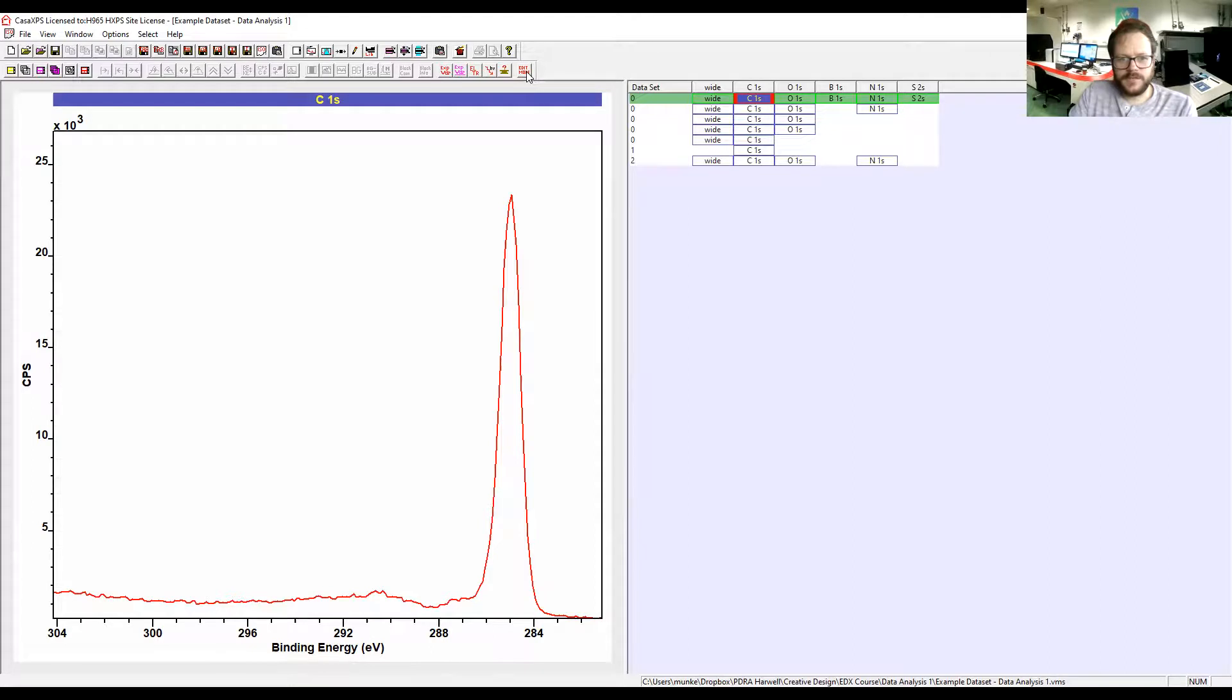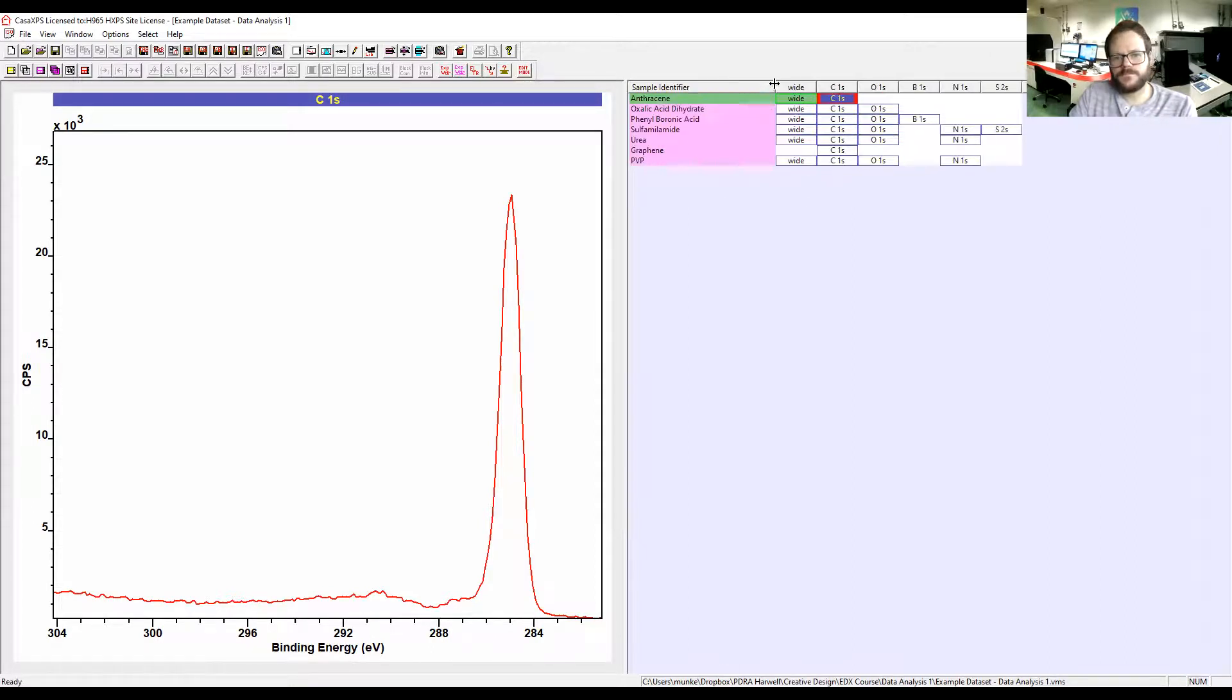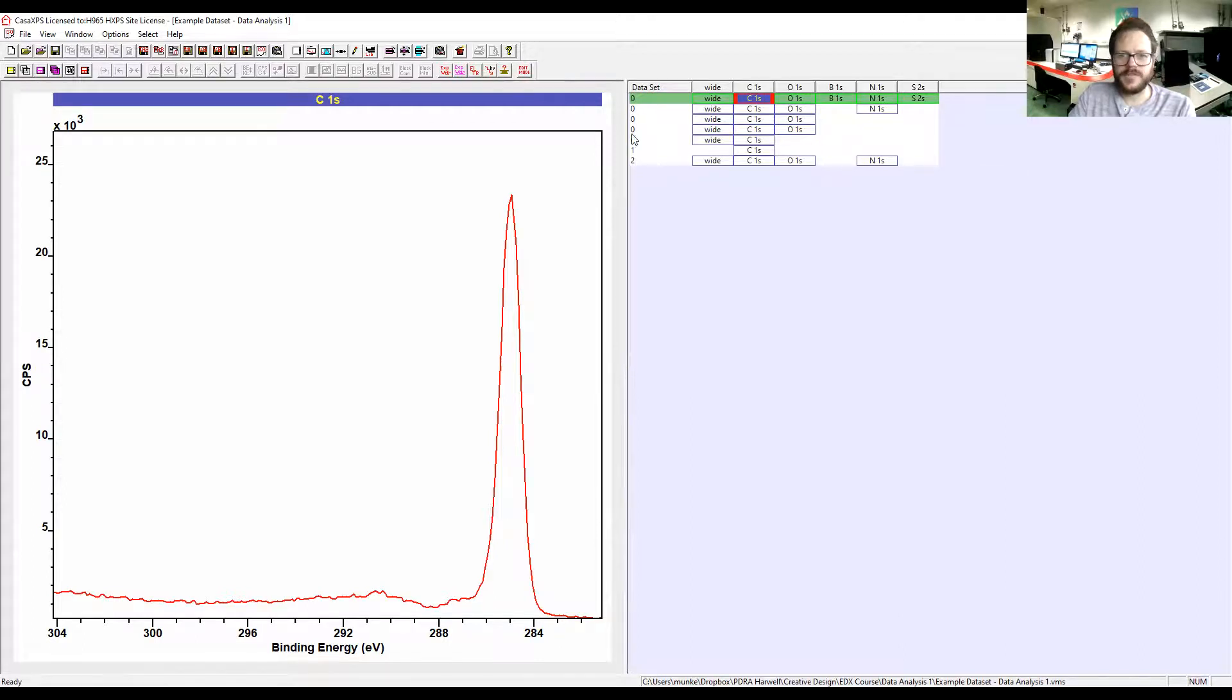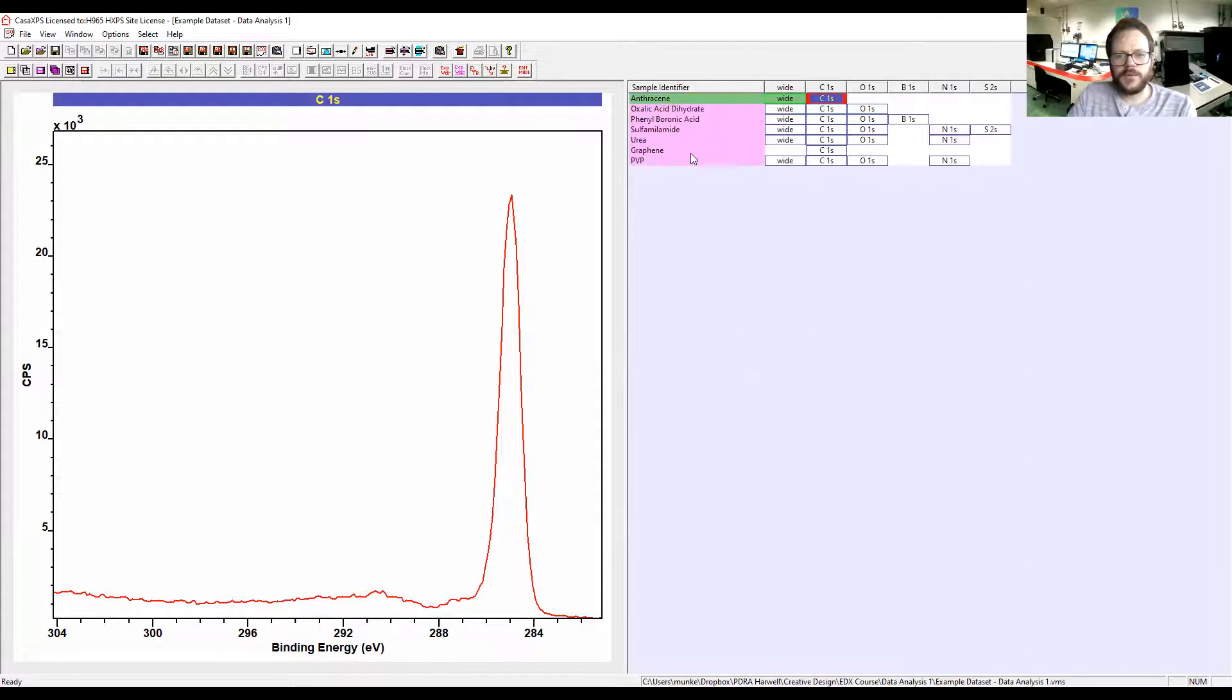Finally, I just want to mention something called Edit Mode. If we toggle this, we can then bring up our sample identifiers. By default, Casa will usually be set onto this mode. If you just click Edit Mode, that will bring up all of your sample names.